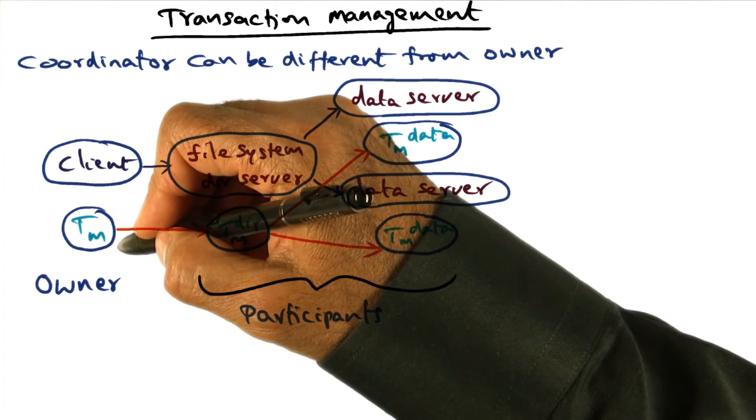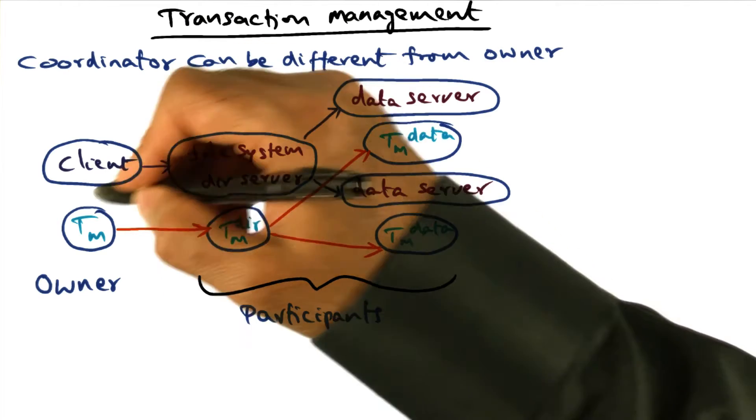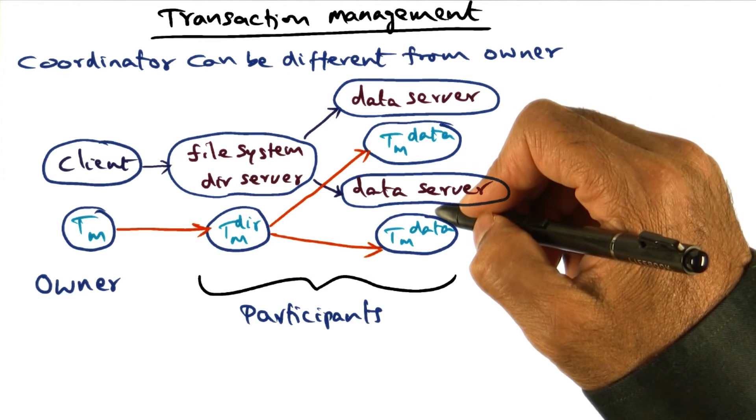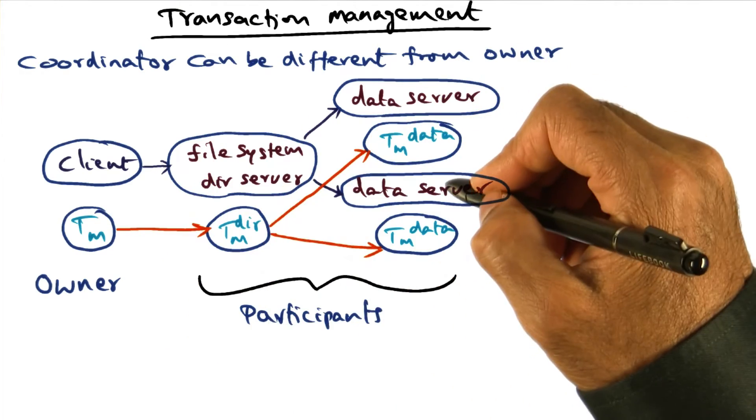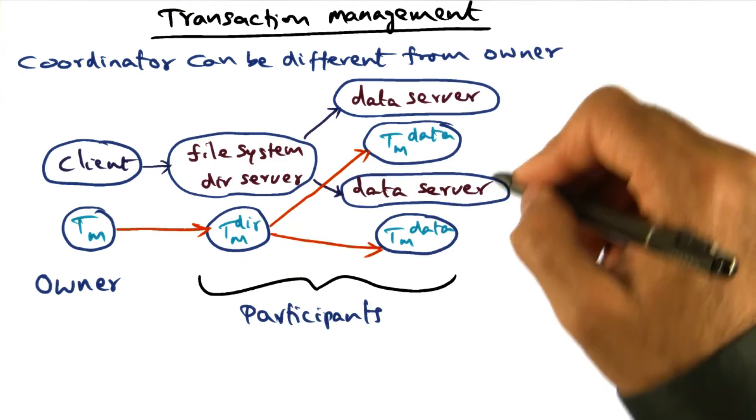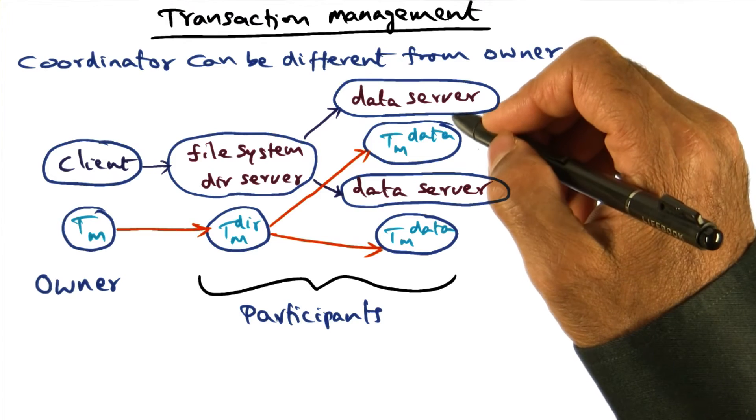That node becomes the transaction manager for this particular transaction tree, in terms of what needs to be done to clean up anything that happens adversely during the interaction I'm showing you in this particular picture.